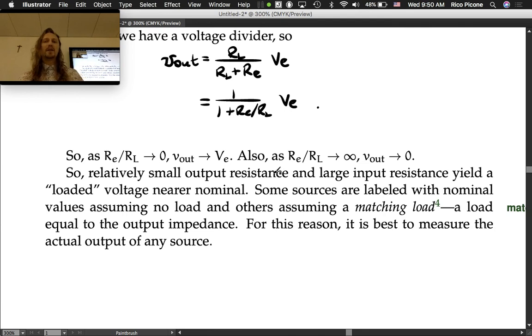To sum up: relatively small output resistance and large input resistance yield a loaded voltage near nominal. Some sources are labeled with nominal values assuming no load, and others assuming a matching load. It turns out that a matching load actually gives you the most power transfer, but that's something we haven't proven in this class. For this reason, it is best to measure the actual output of any source.